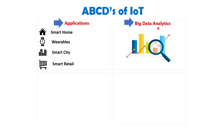Moving on to B, which stands for Big Data. IoT systems generate an enormous amount of data every second through sensors, actuators, and control devices. However, this raw data holds little significance on its own — it needs to be structured and processed to derive meaningful insights. We will delve deeper into this topic in future videos.